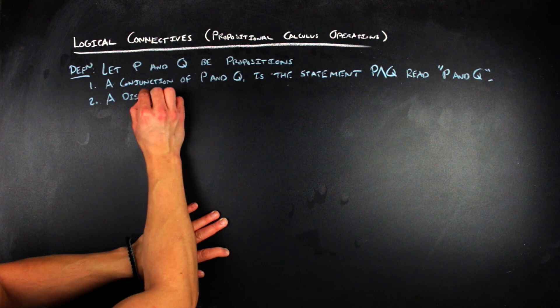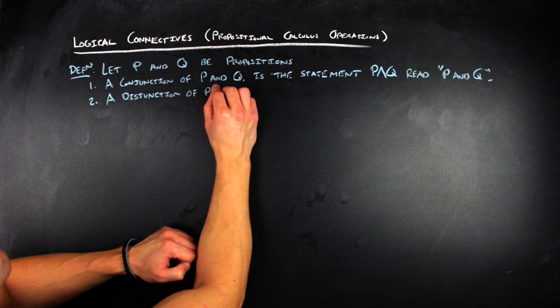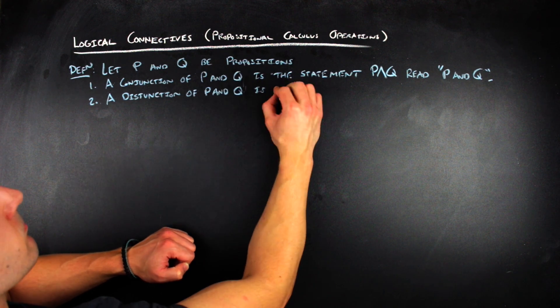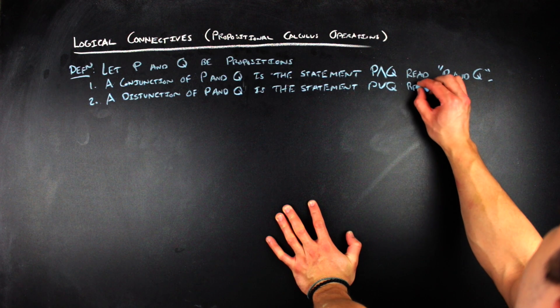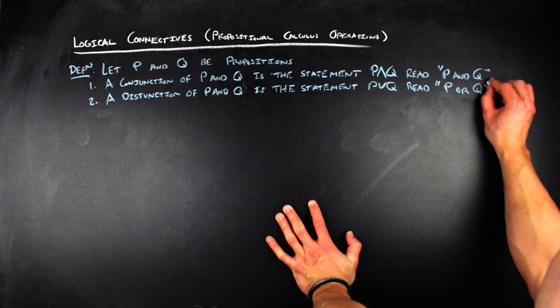Two, the disjunction of P and Q is the statement P vee Q, and that's read as P or Q.